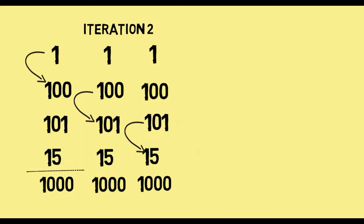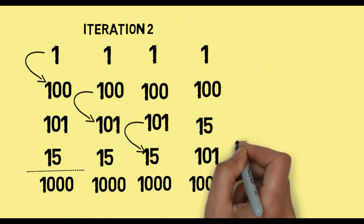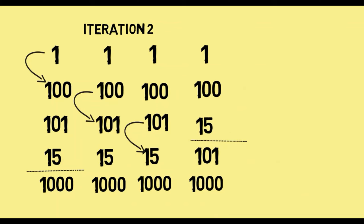Next, we compare 101 with 15. In this case, 101 is bigger than 15, so it goes down and 15 comes up. Now if you closely observe, our last two elements are sorted. In the first iteration, 1000 moved to the last position, which is its correct position. In the second iteration, we progressively keep comparing elements as we move our comparison pointer downwards: 1 to 100, then 100 to 101, then 101 to 15. We stop at 15 because 1000 was sorted — we stop once we reach the unsorted elements.